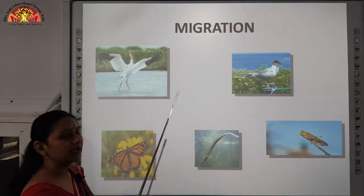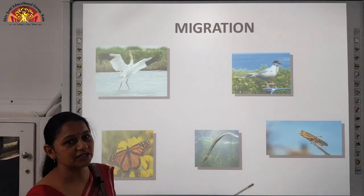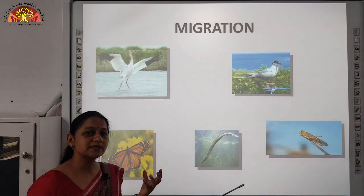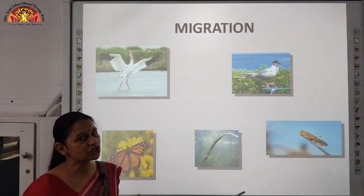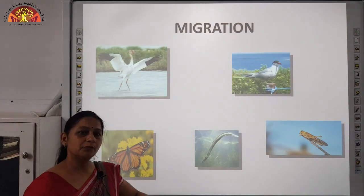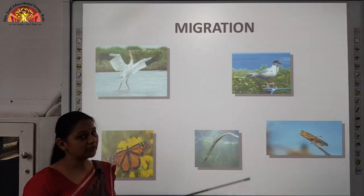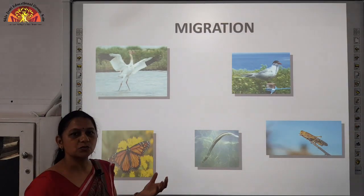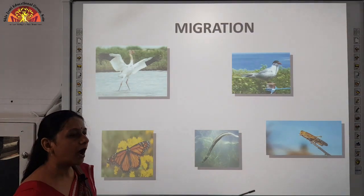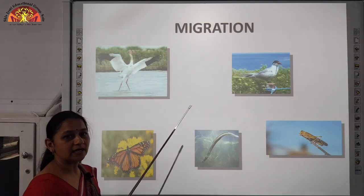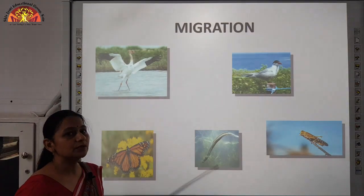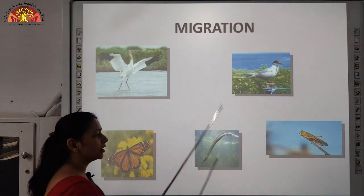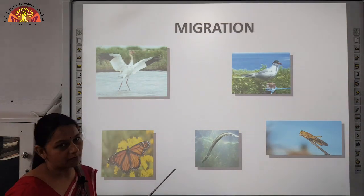Next is migration. Migration is the mass movement of animals from one place to another in search of food, water and shelter. When conditions become harsh, they move to another place where they can find food and water or survive easily. Many animals migrate to escape from harsh weather. Like the Siberian crane — it migrates from Siberia to India every year. Other animals which migrate are arctic tern, European eels, locust and monarch butterflies.